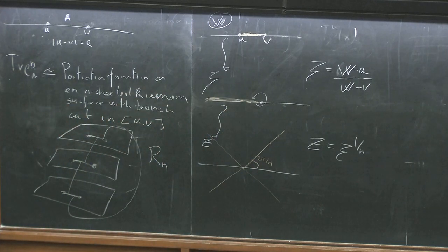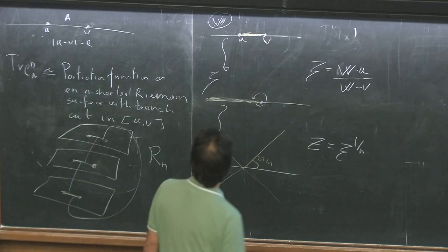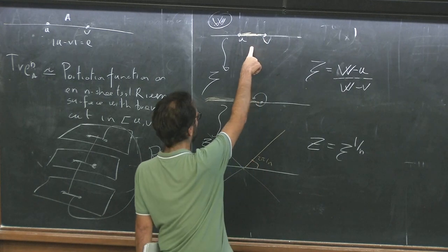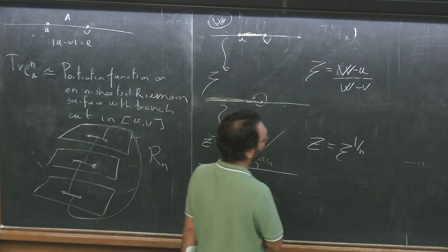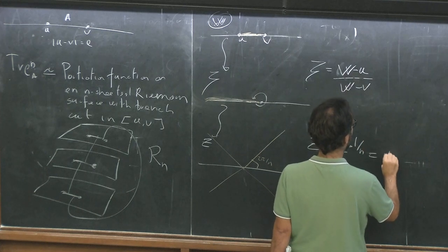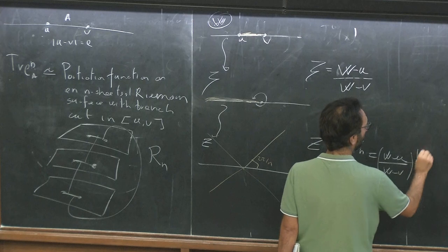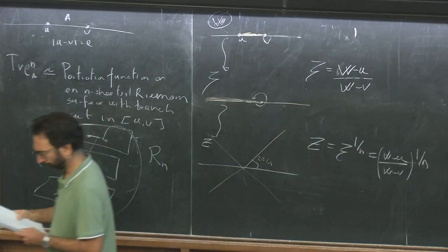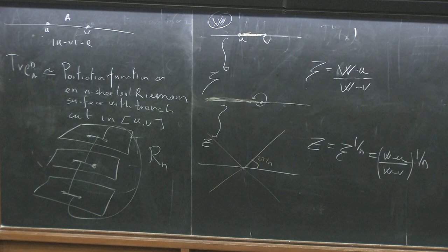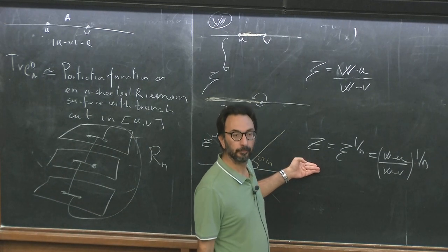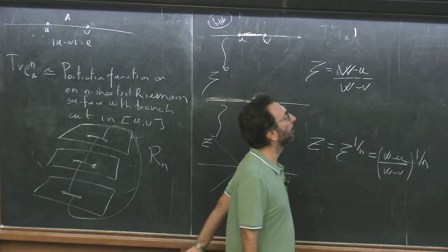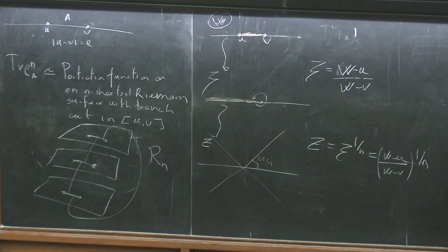This is basic conformal transformation. So overall, the transformation that maps our N-sheeted Riemann surface to the complex plane, plugging this formula in, is Z equal to (W minus U) divided by (W minus V), everything to the power one over N.